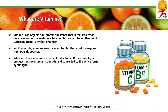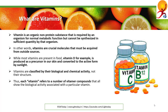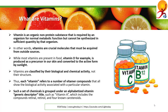While most vitamins are present in fruit, vitamin D for example is produced as a precursor in our skin and converted to the active form by sunlight. Vitamins are classified by their biological and chemical activity, not their structure. Thus each vitamin refers to a number of vitamin compounds that all show the biological activity associated with a particular vitamin.